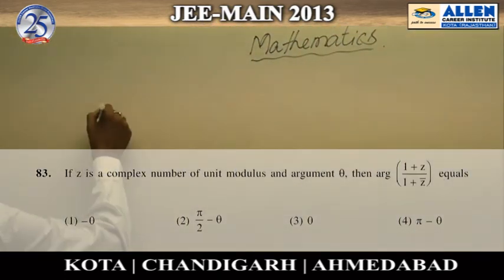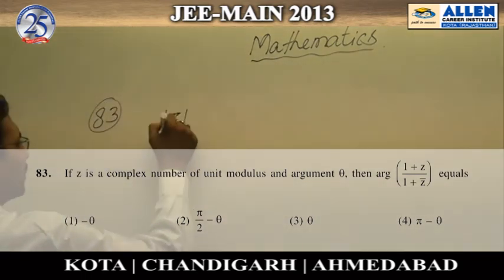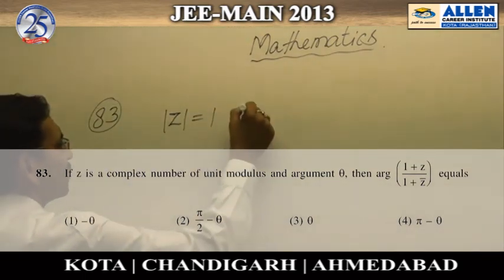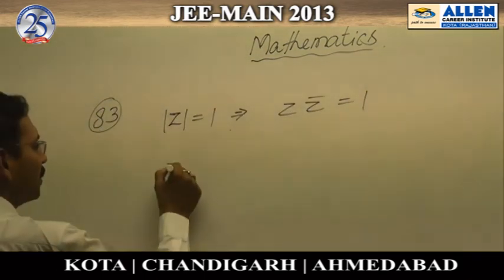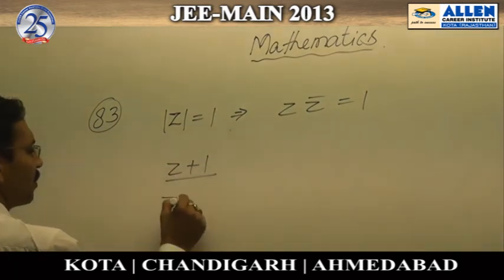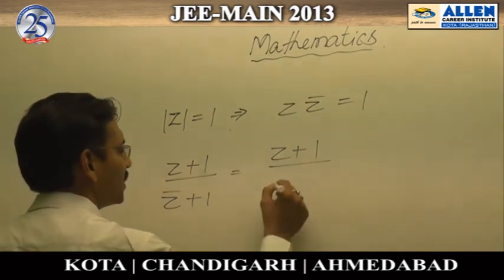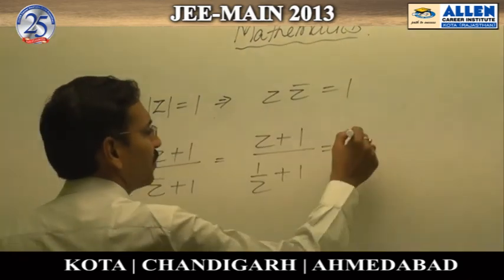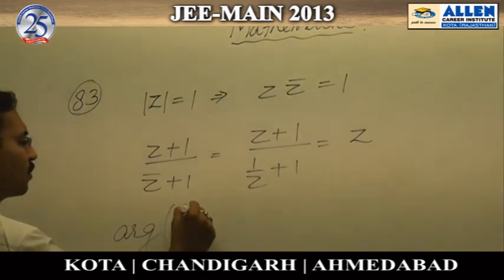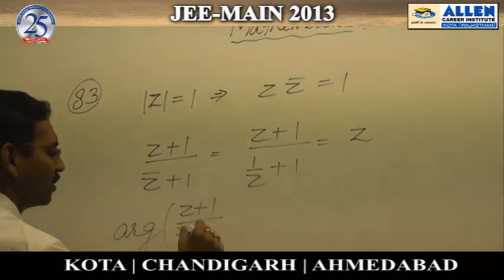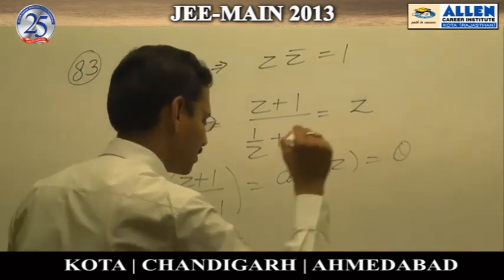In question number 83, Z is a unimodular complex number, meaning its magnitude is 1, so Z times Z-bar equals 1. We are asked for the argument of (Z+1) divided by (Z-bar+1). Replacing Z-bar with 1/Z and simplifying gives us Z. Therefore, the argument of (Z+1)/(Z-bar+1) equals the argument of Z, which is already given as theta. So our answer is option 3.